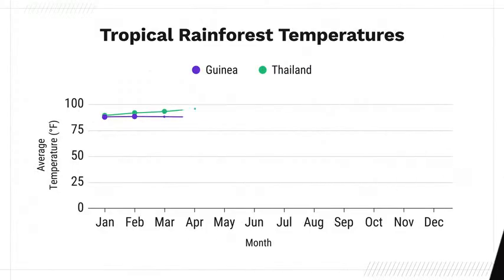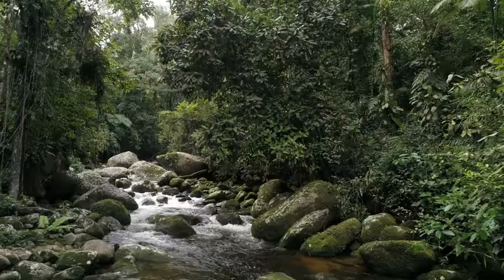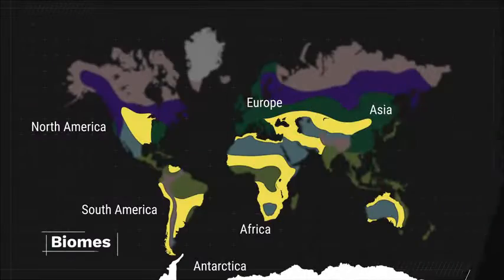Here is a graph showing the monthly temperatures for our two rainforests in two different parts of the world. What do you notice about the average temperatures in both locations? Both locations have similar temperatures throughout the year — hot! It's warm enough all year round for lots of different plants to grow. To see why, let's explore two other biomes.